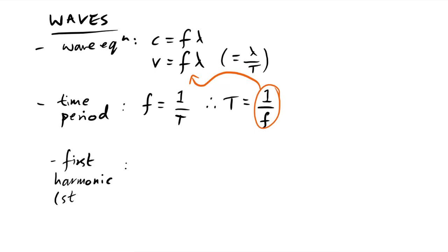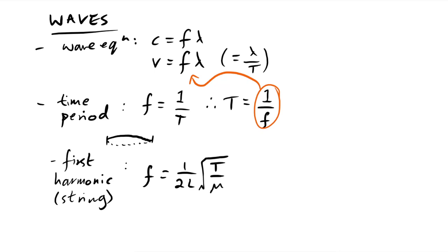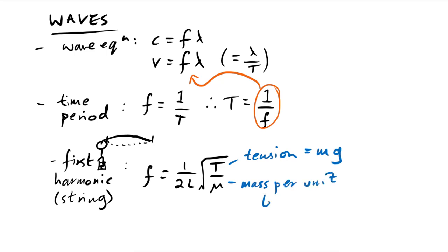The first harmonic equation for a wave on a string — which looks like one loop — is: f = (1/2L) × √(T/μ), where L is the string length, T is the tension (often equal to mg from hanging weights via a pulley), and μ is the mass per unit length in kg/m. Note that 2L is effectively the wavelength, since there's half a wavelength on the string for the first harmonic. Therefore, rearranging gives us that √(T/μ) equals the speed of the wave on the string.